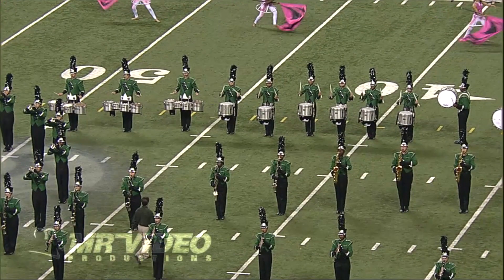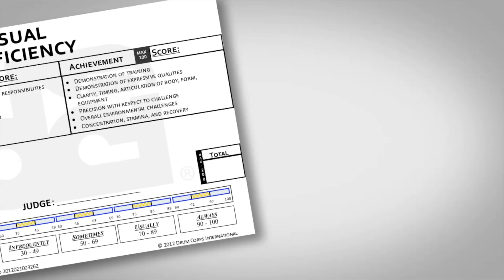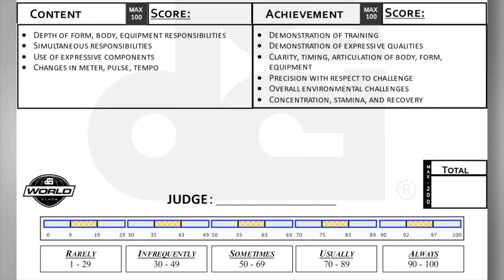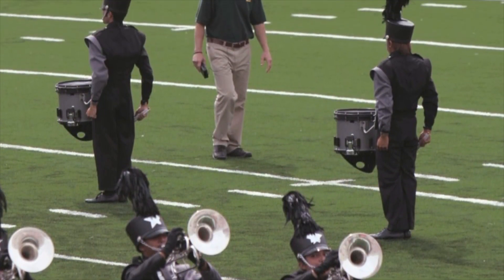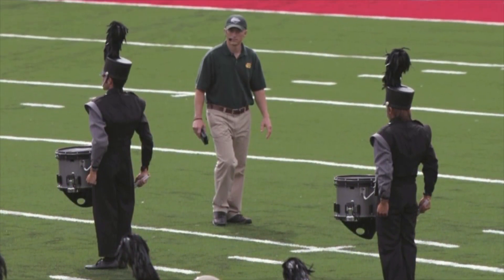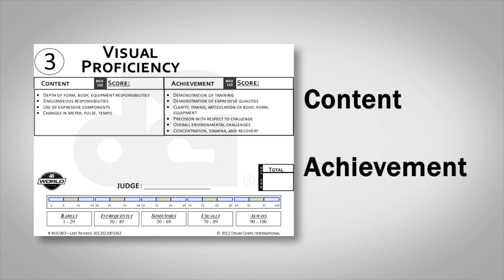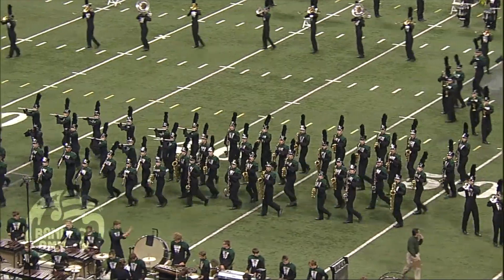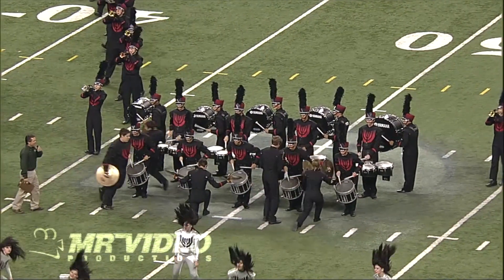As a result of the scoring process, strengths and weaknesses are indicated. At the time of the production of this DVD, the judges have been trying out a new sheet called Visual Proficiency. This is not a drastic move away from the recent BOA or DCI judges sheet. This sheet has two sub-captions called Content and Achievement. We have chosen to use this terminology. The wording on the judges' sheets will likely change over time, but the overall concept is not likely to change drastically.